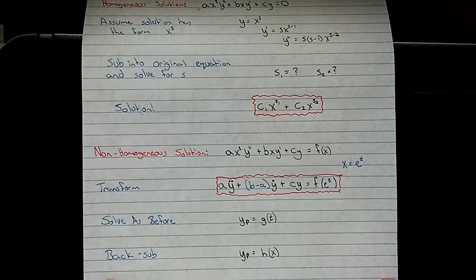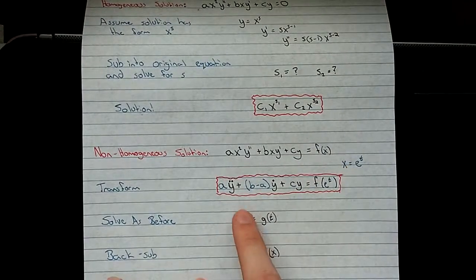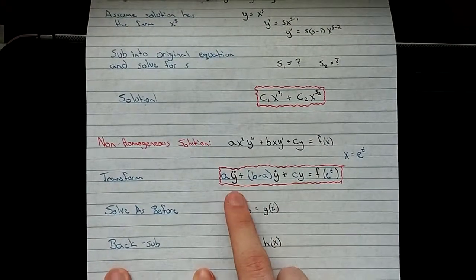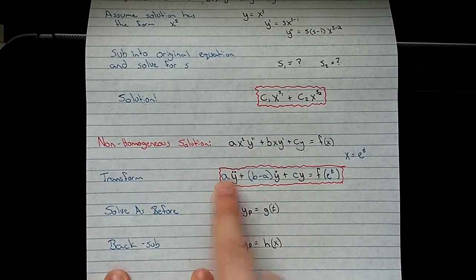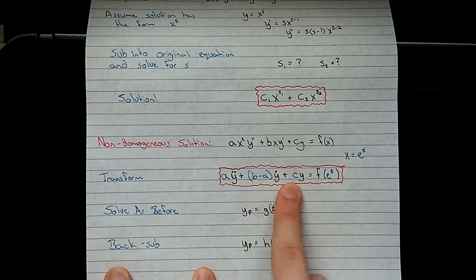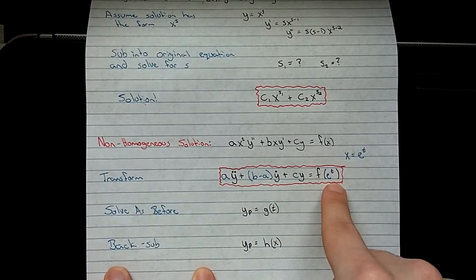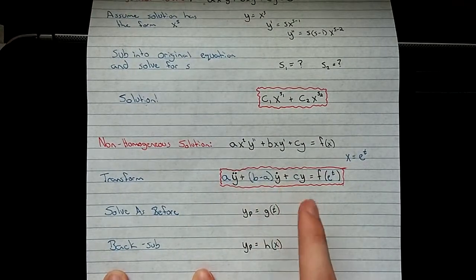So for the non-homogeneous part, take our same equation here and we just put it into this form. A stays the same. It becomes b minus a right here. C stays the same. And you want f at e to the t. Also notice the x's have gone away.